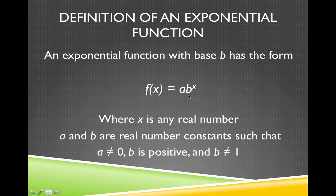The a and the b are real number constants such that a cannot be equal to zero. This a cannot be equal to zero. b has to be a positive number, and b cannot be equal to one. So this number right here, the base, cannot be negative, it cannot be zero, and it cannot be one.